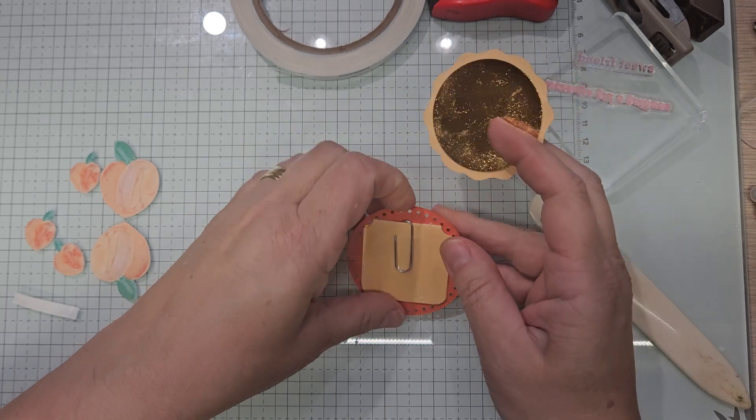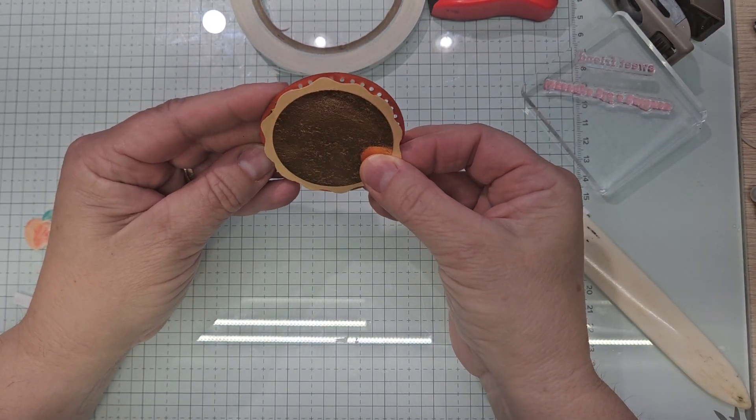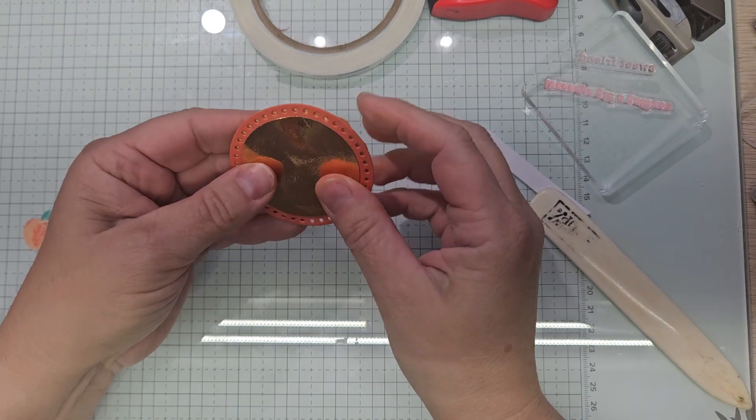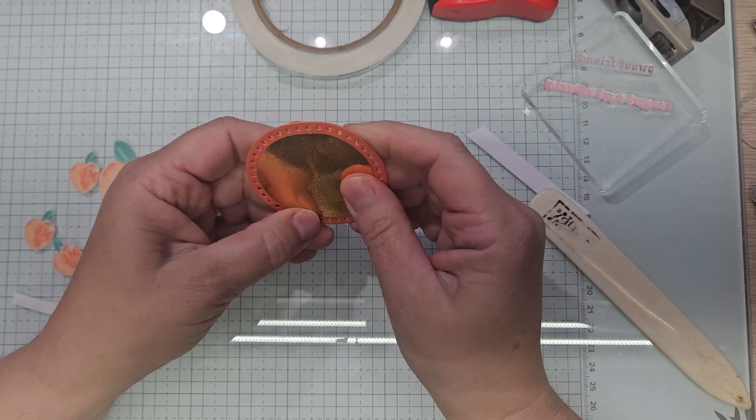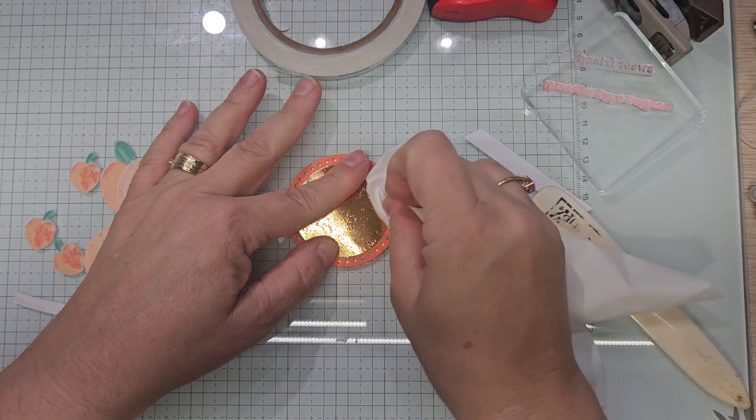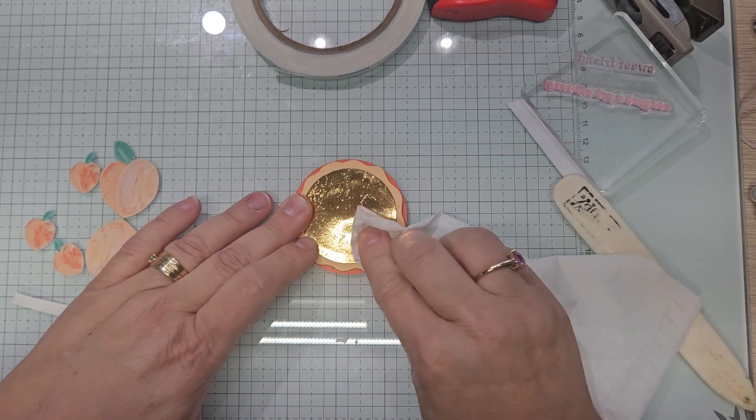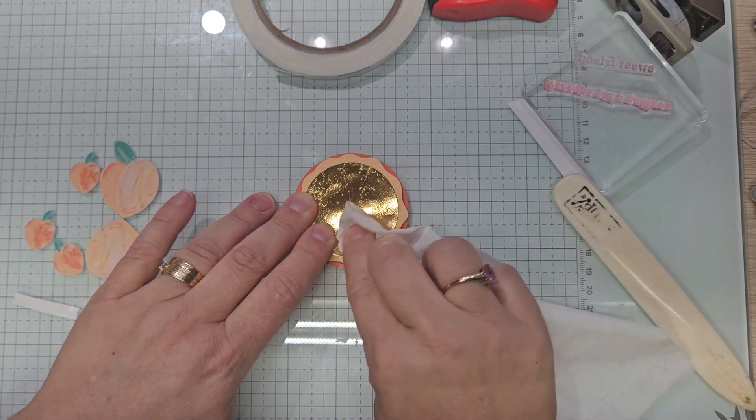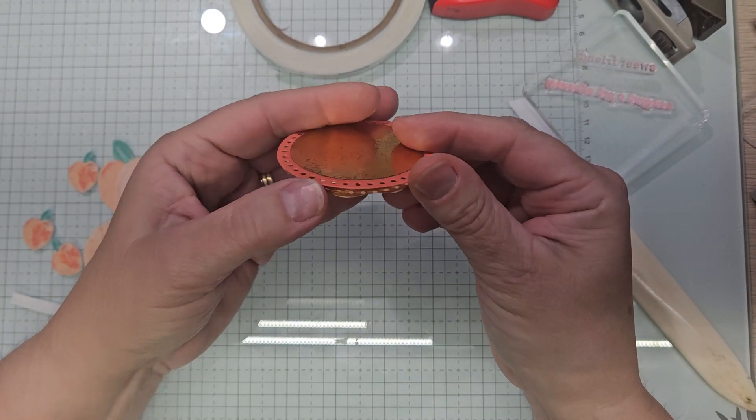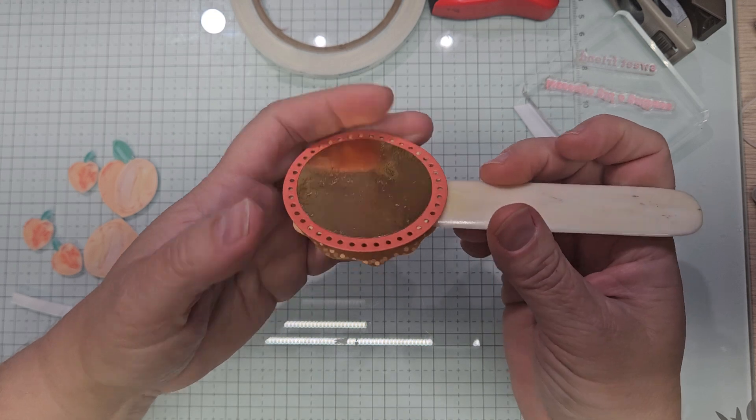So now this one is going to go on the back so I have two different looks, the front side and the back side. I have a little glue there so let's try to clean that up. It does not lay perfectly flat unless you want to put a whole bunch of dimensionals on there, but it's quite thick as it is.